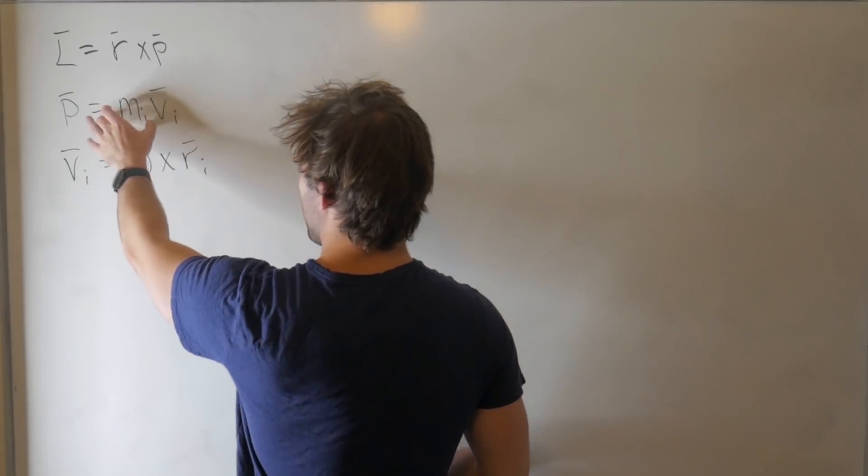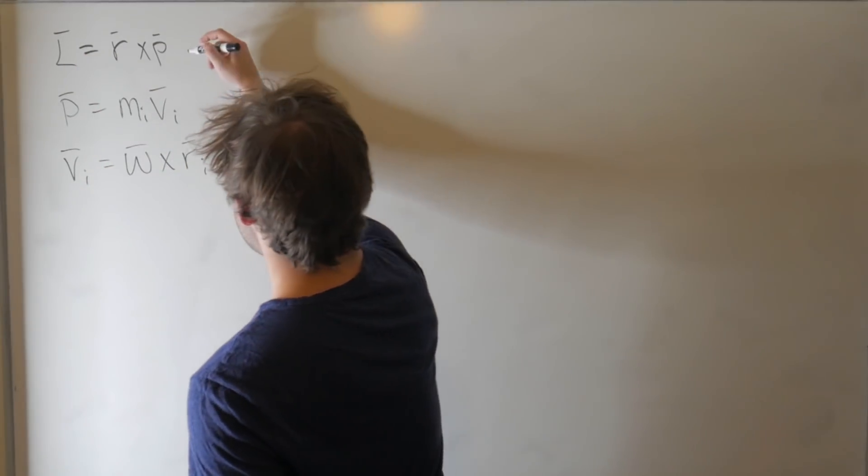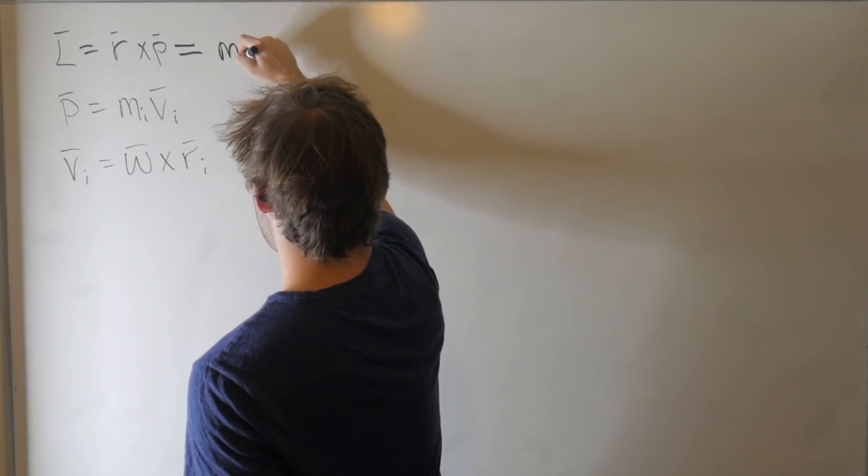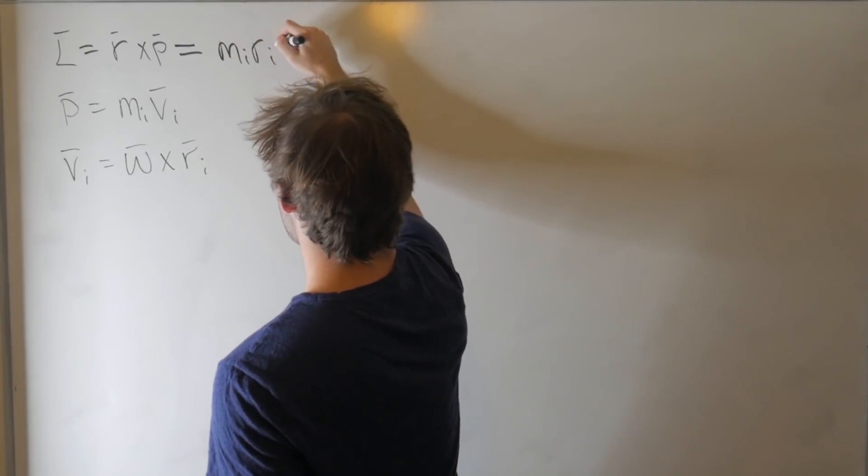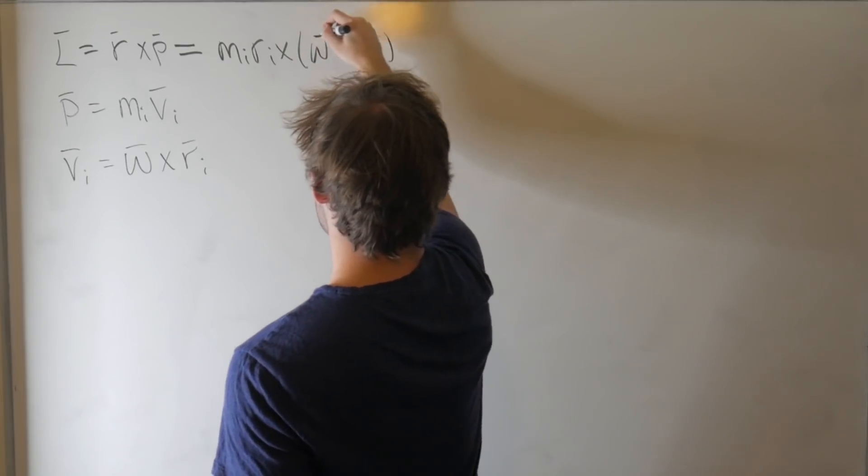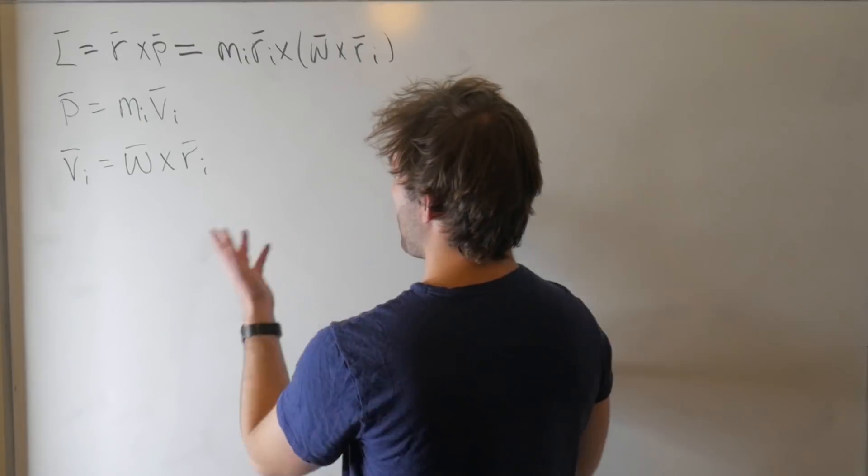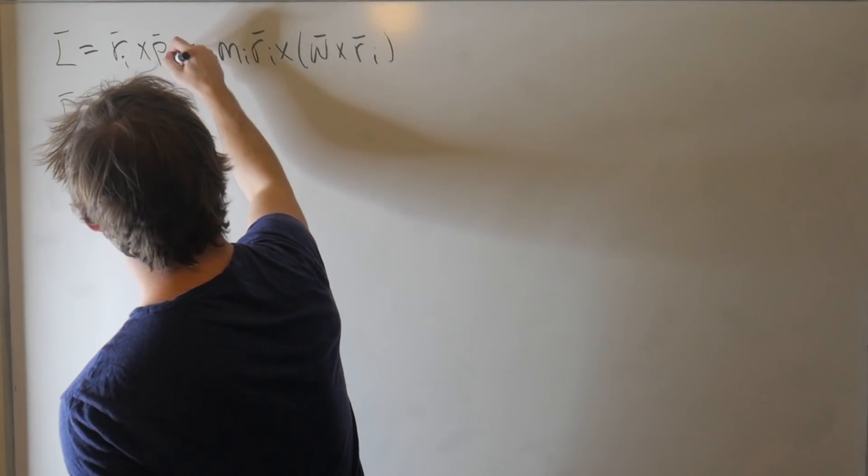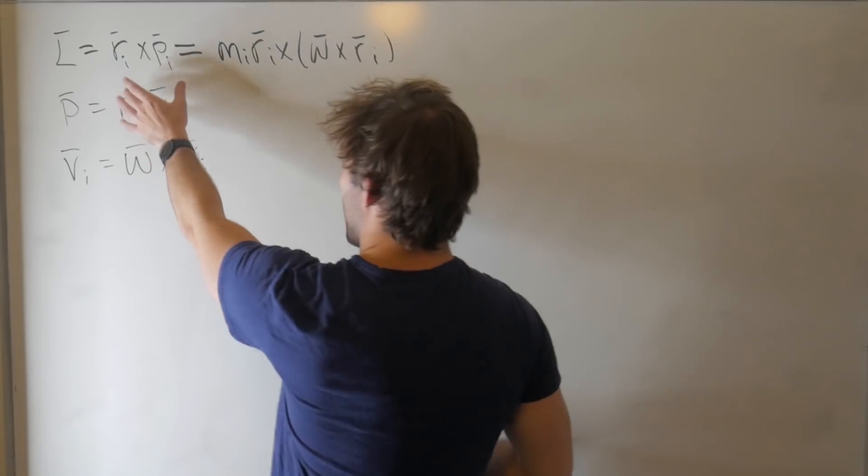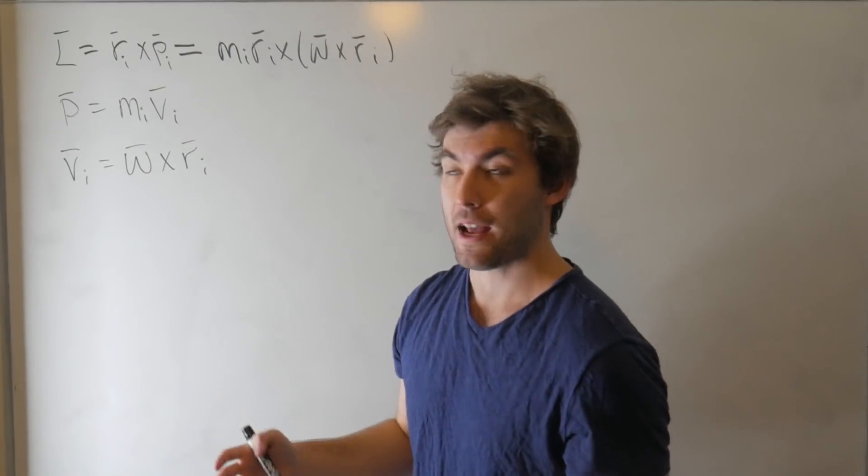Then we can substitute all of this into this definition of angular momentum, and we get something kind of gross, where L is equal to sum of m_i r_i cross omega cross r_i. So we've got a double cross product. I'm going to go ahead and index this, just to be clear. So this is the total angular momentum. We're summing over i, we're summing over all of our masses.